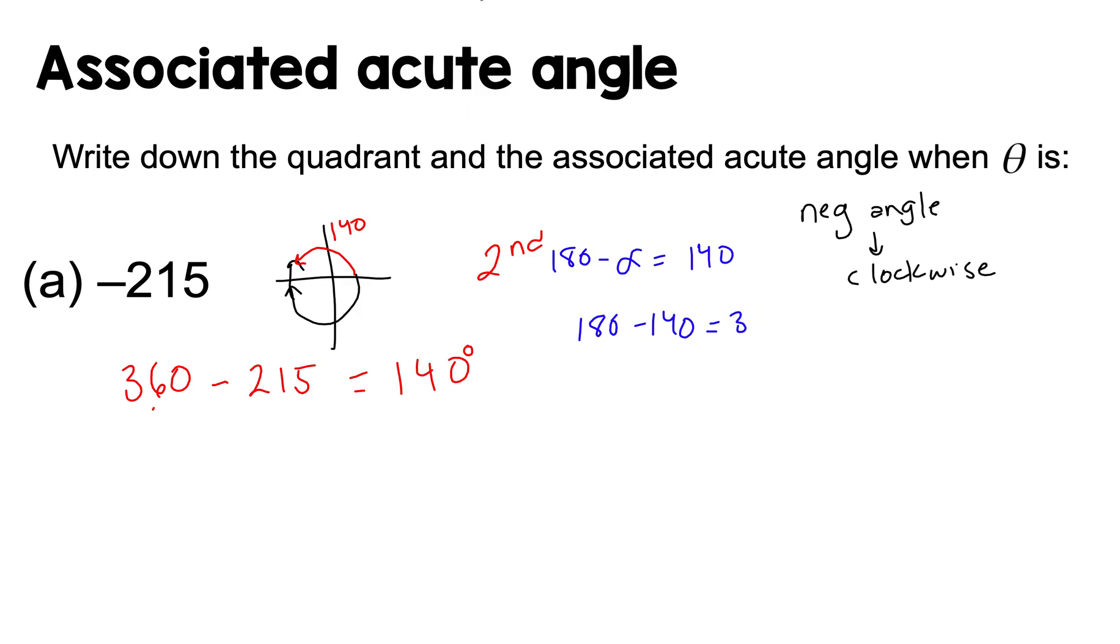Sorry this is 145, not 140. So 145 and 145. So 180 minus 145 will give us 35 degrees. So the associated acute angle is 35 degrees.